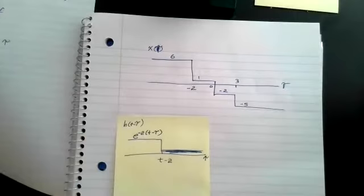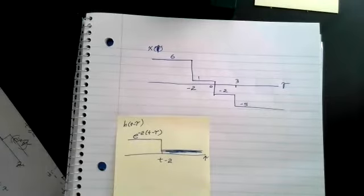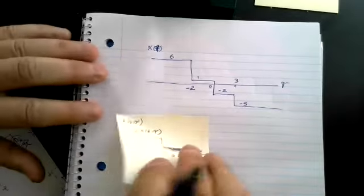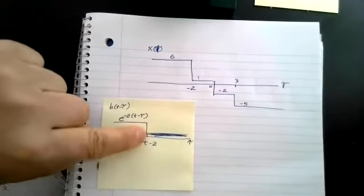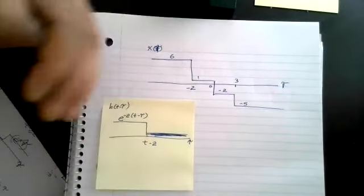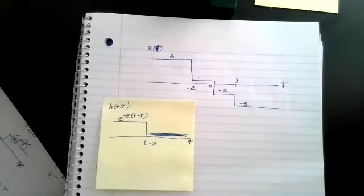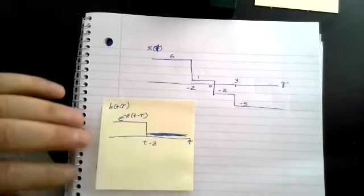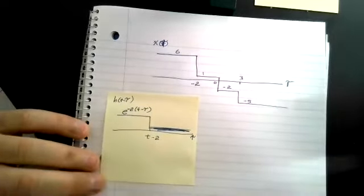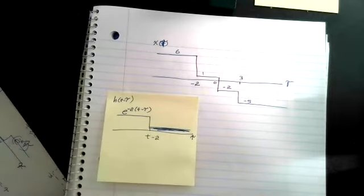Does that make sense? The next step is to take this and move it so the transition point is way beyond all the exciting ups and downs in X of tau. We're moving T to minus infinity. We're trying to find Y(t) for T starting at minus infinity up to a certain point, and that certain point is when something interesting is going to change.